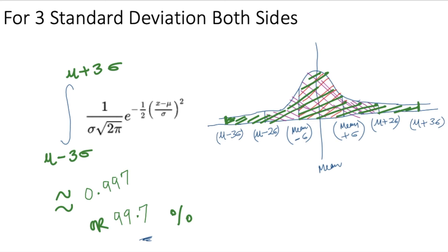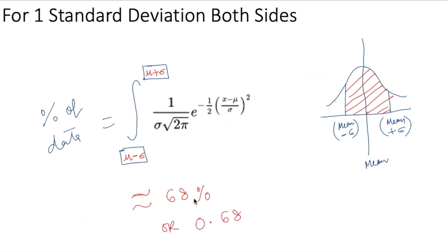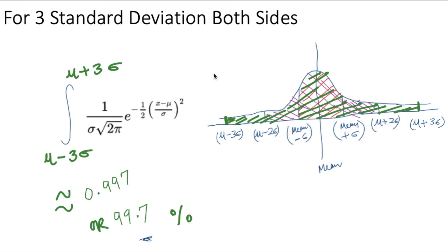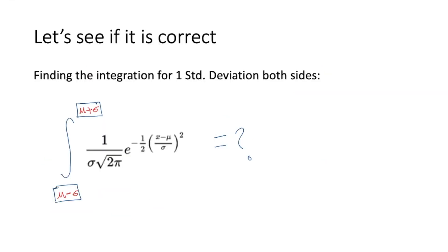To summarize: within one standard deviation, integrating from mu minus sigma to mu plus sigma gives 68%. Within two standard deviations, integrating from mu minus 2 sigma to mu plus 2 sigma gives 95%. Within three standard deviations, integrating from mu minus 3 sigma to mu plus 3 sigma gives 99.7%. This is how the empirical rule derives its exact percentages.